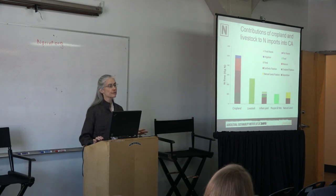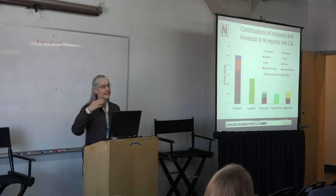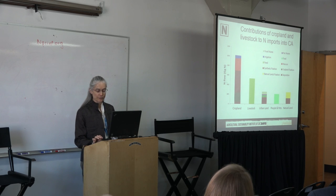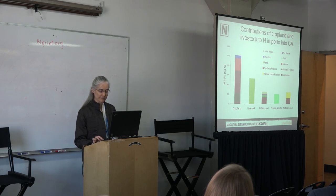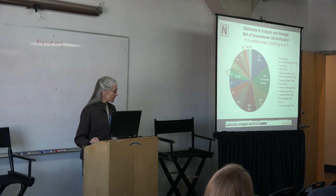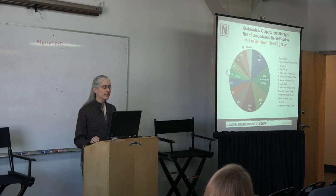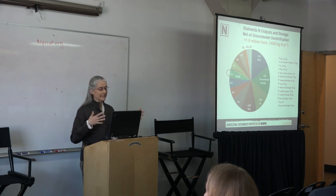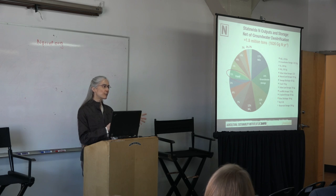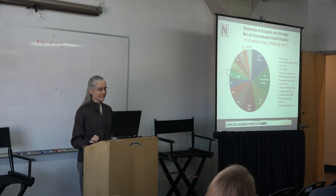This analysis excludes fossil fuels, which were a separate analysis in the mass balance. In terms of outputs and storage: the food produced by agriculture in the state — the nitrogen in that food — only accounts for 5% of all the flows of nitrogen going out of or within the state. Only 5%. The two big outputs are NOx emissions from fossil fuel burning, and a lot of nitrate going into groundwater and staying there. That's a really big area. Ammonia at 12% is primarily from livestock production.